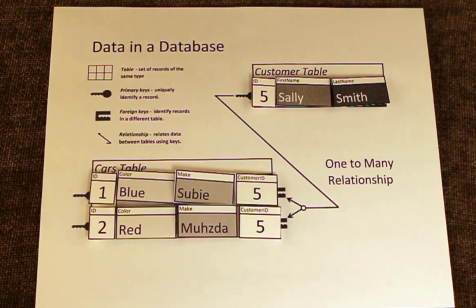Databases use different types of relationships. This relationship between cars and customers is called a one-to-many relationship. Sally can own many cars, but each car can only have one owner.